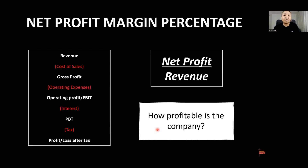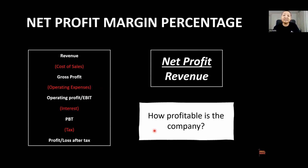Now we get to the net profit margin. You want to see how profitable the company is, because you're dividing the net profit by the revenue. You've taken all the expenses — operating expenses, interest, and tax — into account. That tells you how profitable the company is overall.